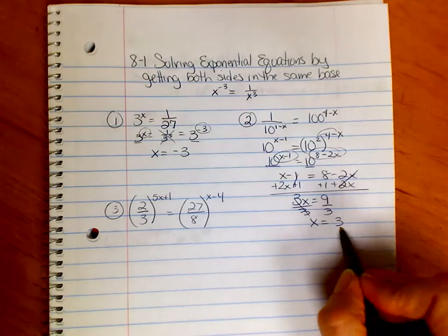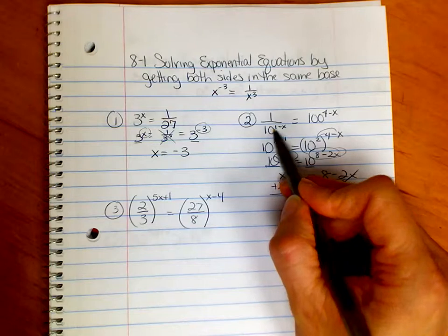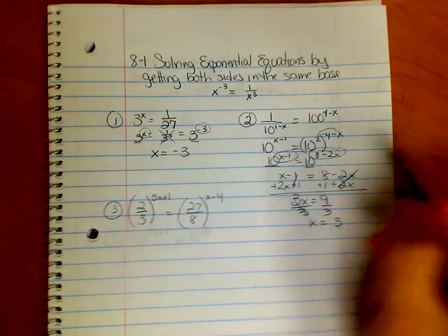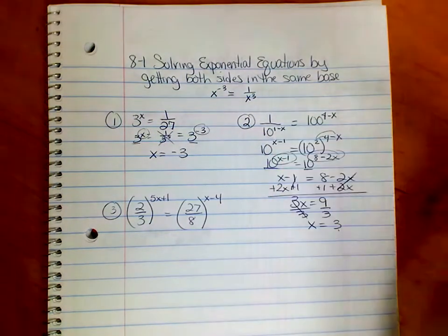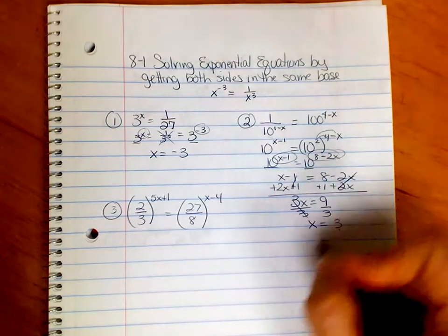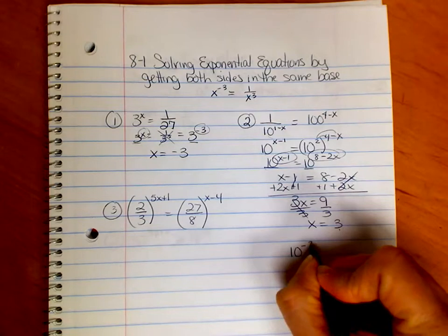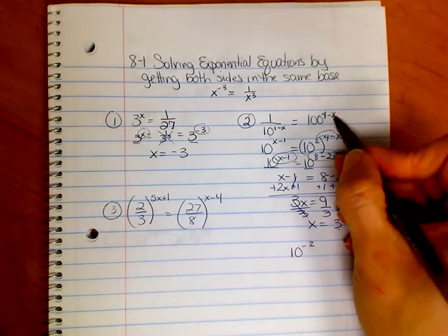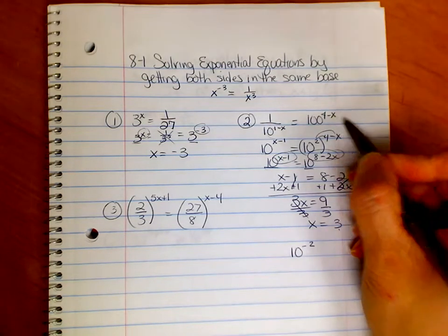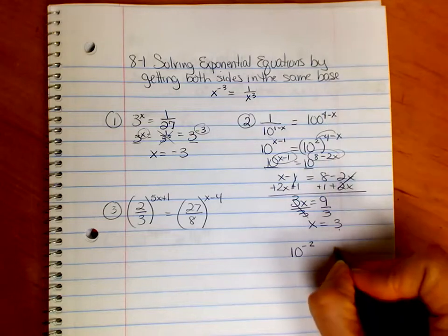You can always check. If I put a 3 back in here, I get 1 minus 3, which is negative 2. If I put that back, so we can check over here, it would be 10 to the negative 2. And then if we put a 3 there, we get 100.